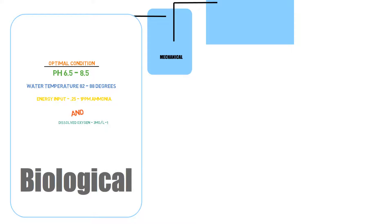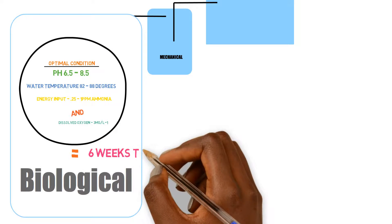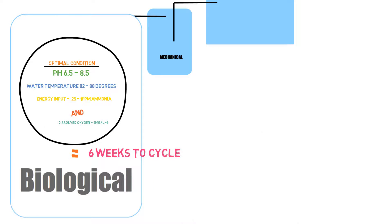So going off of these factors, we can say that it's going to take roughly around six weeks in an optimal environment, roughly around six weeks for your system to be completely cycled.